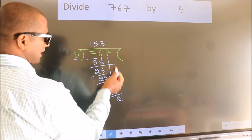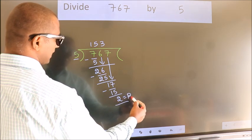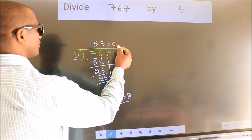No more numbers to bring down. So we stop here. This is our remainder. This is our quotient.